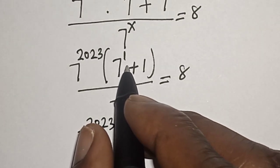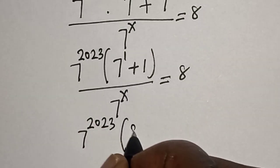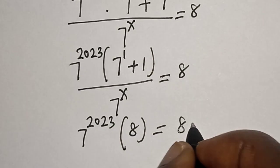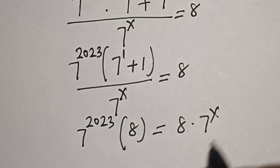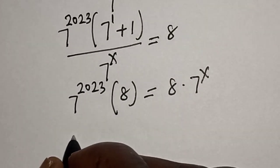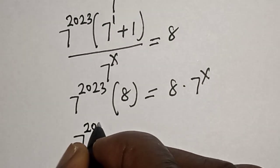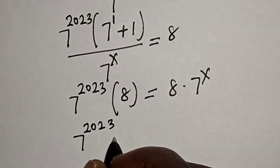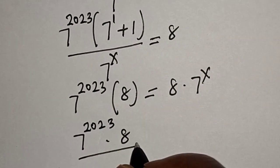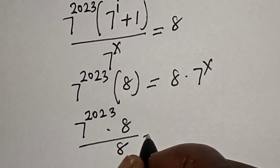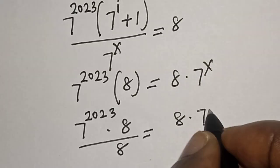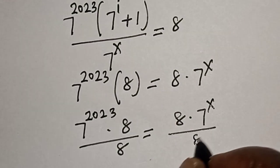7 raised to power 1 is 7, plus 1, that is 8. So we have 8 multiplied by 7 raised to power 2023, divided by 7 raised to power x, equals 8. Now let's divide both sides by 8: 7 raised to power 2023 multiplied by 8, divided by 8, equals 7 raised to power x divided by 8.